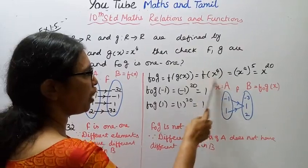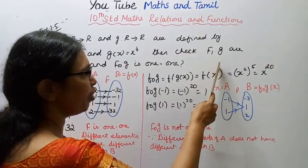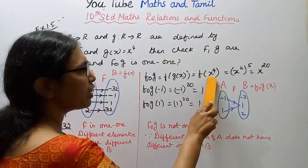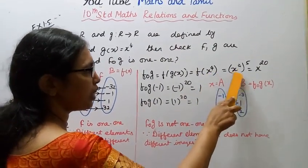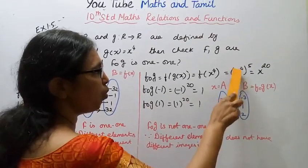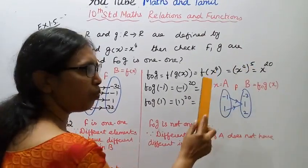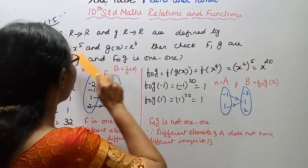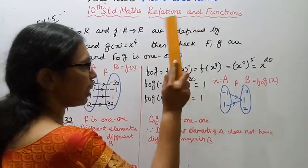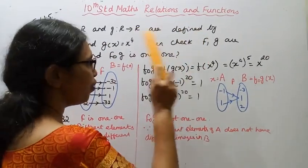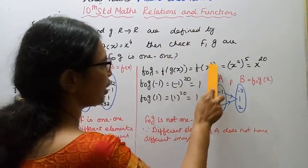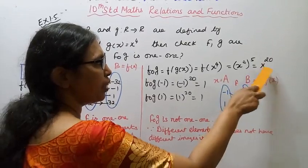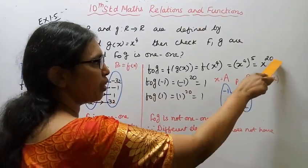Now for f∘g: f(x) = x^5, g(x) = x^4. So f(g(x)) = f(x^4) = (x^4)^5 = x^20. The power 20 is even.